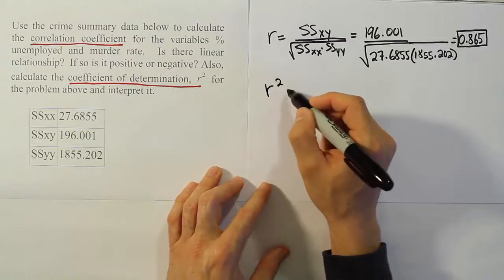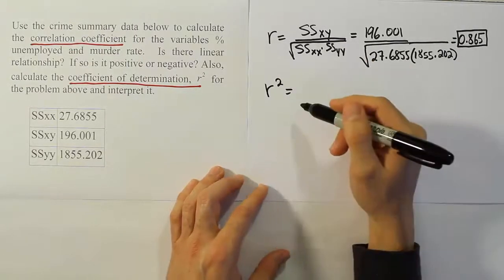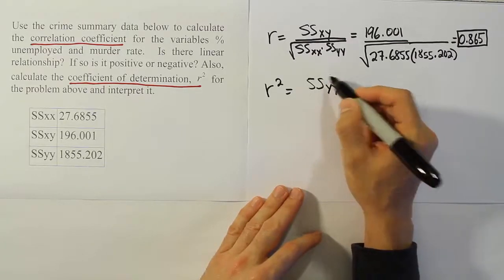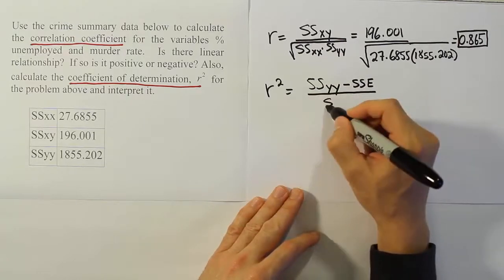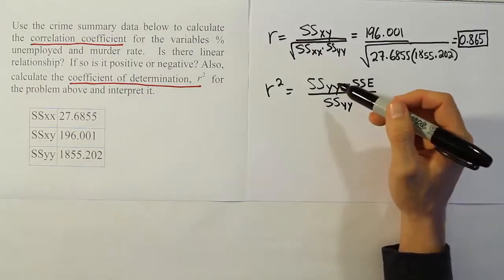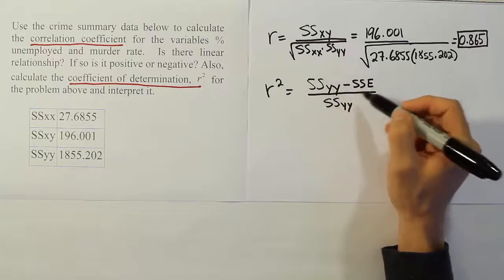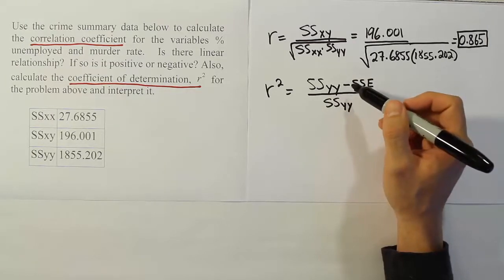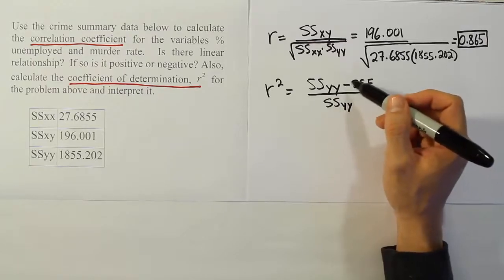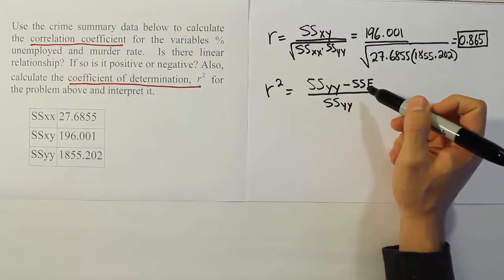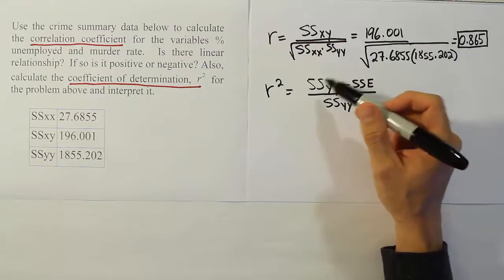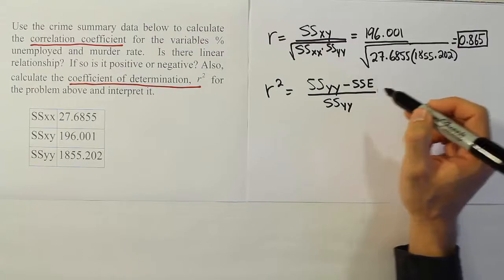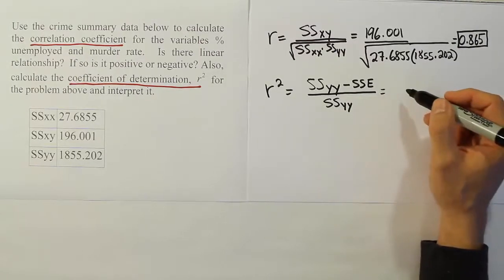The next thing we want to calculate is r squared. We could just square the r value we already have, but using the formula we have: r squared equals ssyy minus SSE, all divided by ssyy. This corresponds to the interpretation of r squared — we're looking at the variation in y, subtracting away the variation due to the error term, leaving the variation due to x, divided by the total variation in y. This gives us the proportion of variation in y explained by including x in the model.